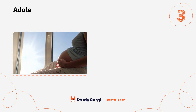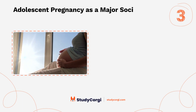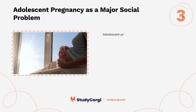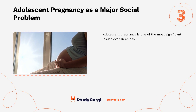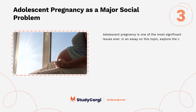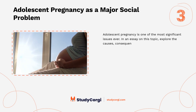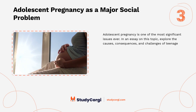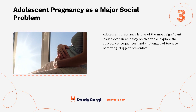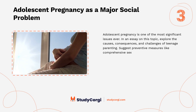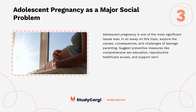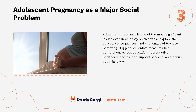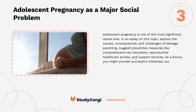Adolescent pregnancy as a major social problem. Adolescent pregnancy is one of the most significant issues. In an essay on this topic, explore the causes, consequences, and challenges of teenage parenting. Suggest preventive measures like comprehensive sex education, reproductive health care access, and support services. As a bonus, you might provide successful initiatives such as teen pregnancy prevention programs.